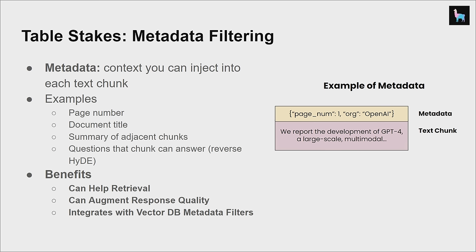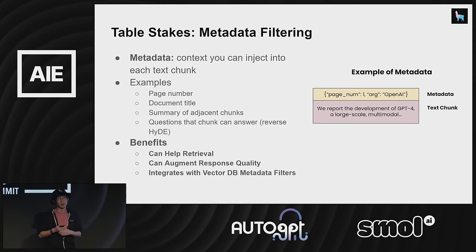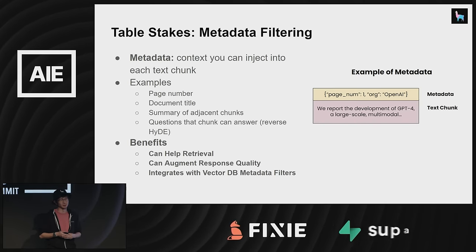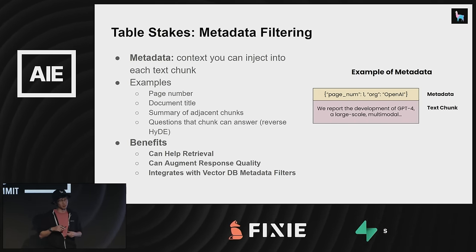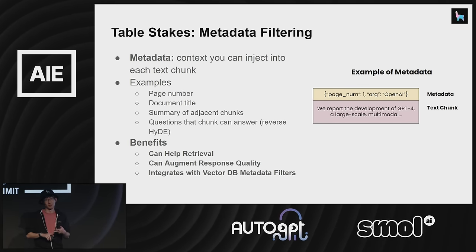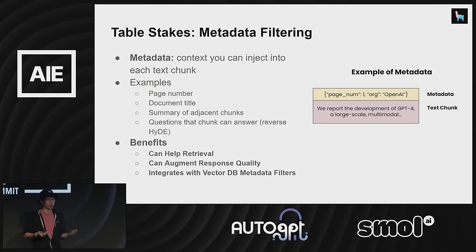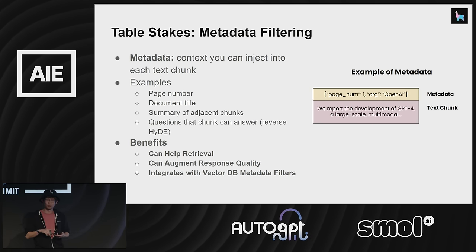Metadata filtering is another table-stakes thing that everybody should look into. Vector databases like Chroma, Pinecone, and Weaviate are all implementing these capabilities. Metadata filtering is basically how you add structured context to your text chunks. You can use this for both embeddings and synthesis, and it integrates with the metadata filter capabilities of a vector database. Metadata is just structured JSON — it could be page number, document title, summary of adjacent chunks. You can even hallucinate questions that the chunk answers.